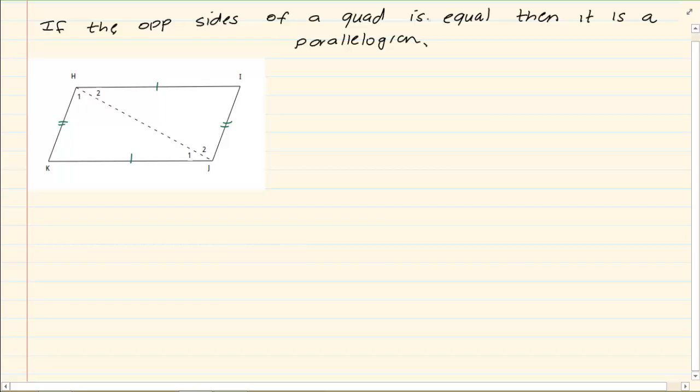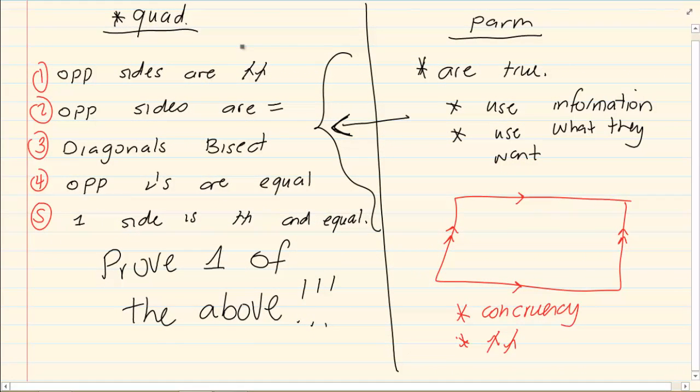Now remember I told you that if I give you a quadrilateral, you have to prove that it is a parallelogram by proving one of its properties. So you could prove that the opposite sides are parallel, the diagonals bisect, opposite angles are equal, or one side is parallel and equal.